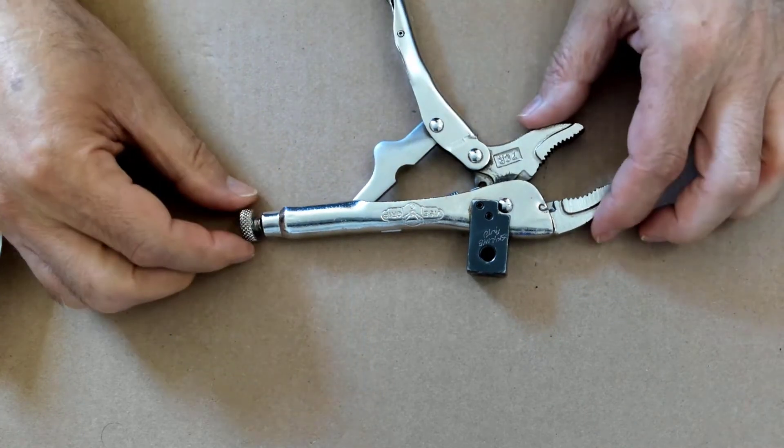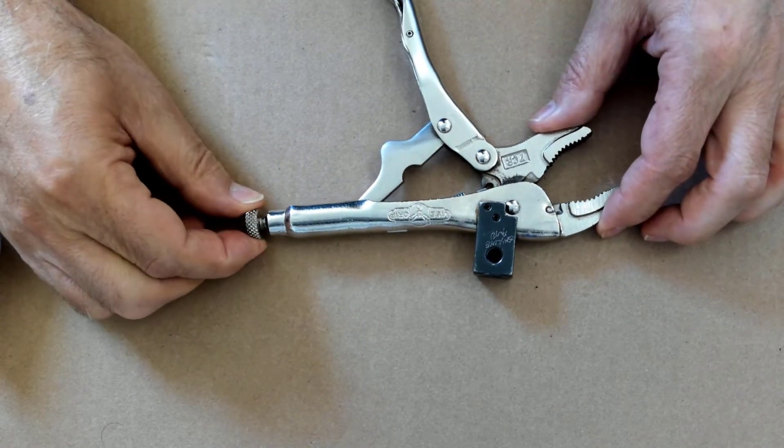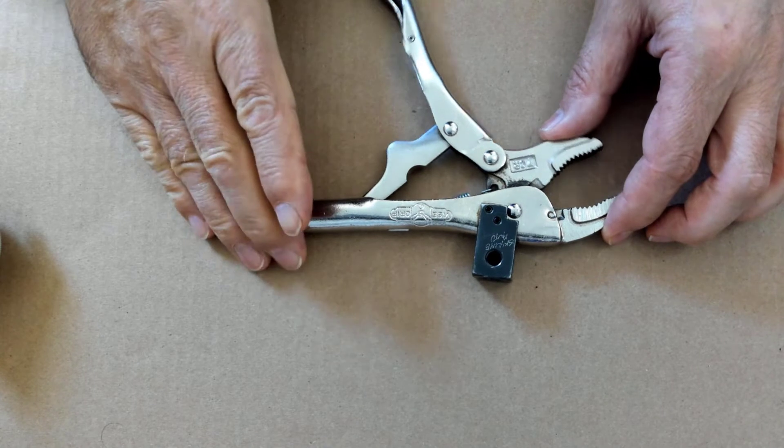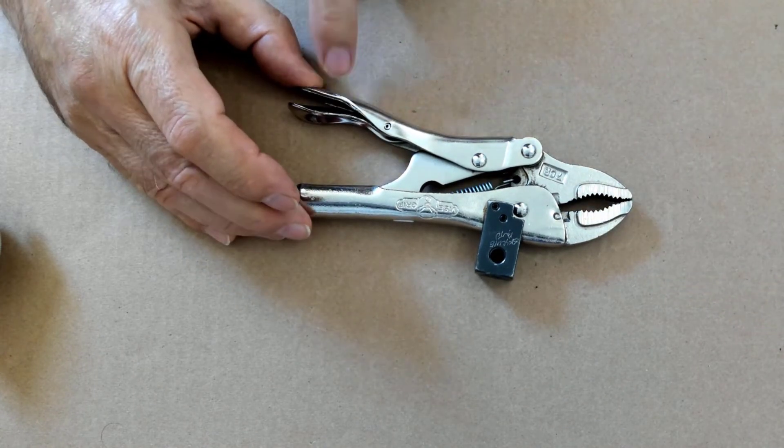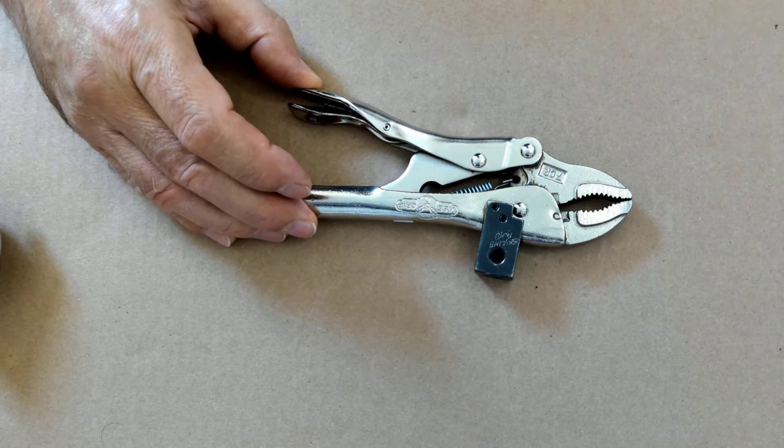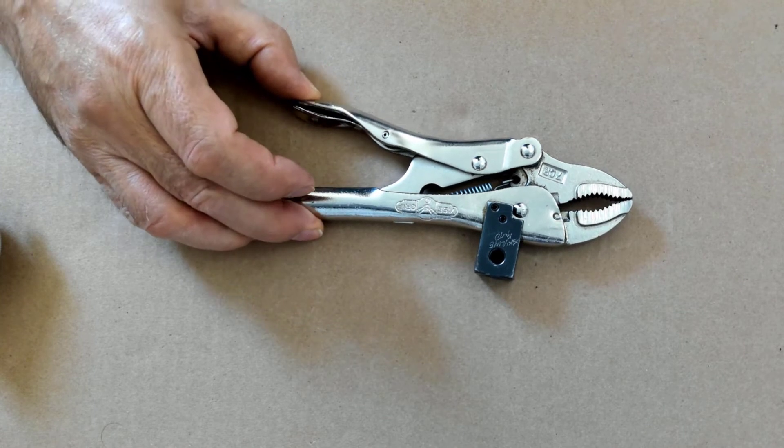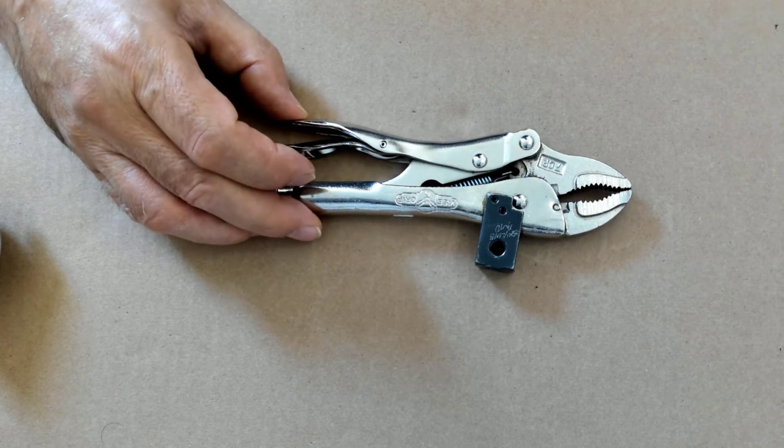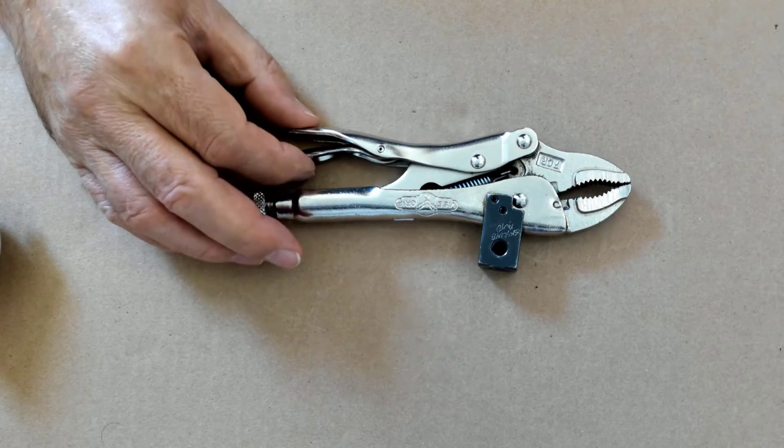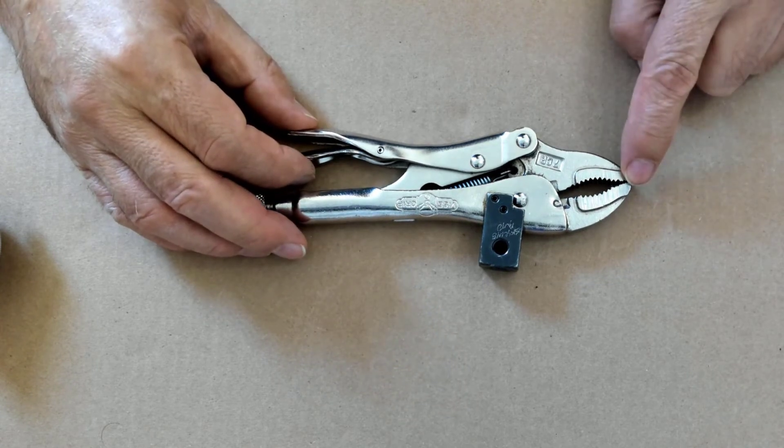I turn the threaded screw just a little bit more and now when I go to close it, I get resistance further out on the clamping mechanism. Now when I squeeze, it has a much more solid click to it and it has more clamping force here.